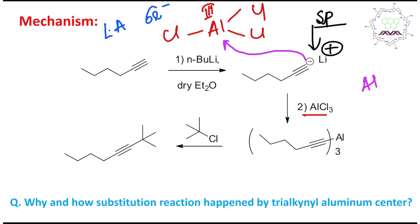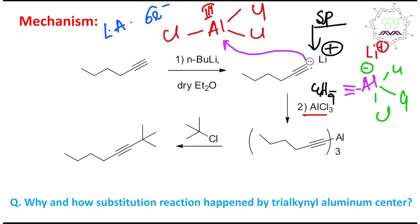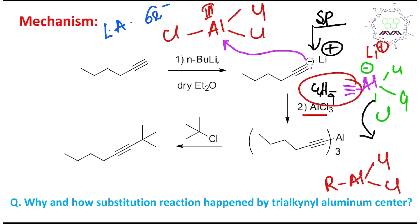So the carbanion — C₄H₉ alkynyl — attacks the aluminium center bearing 3 Cl. Aluminium acquires a formal negative charge after this attack. Because this negative charge on aluminium is not very stable, the Cl is substituted, producing R–AlCl₂. By the same mechanism, the remaining two Cl groups are substituted, ultimately producing trialkynyl aluminium.